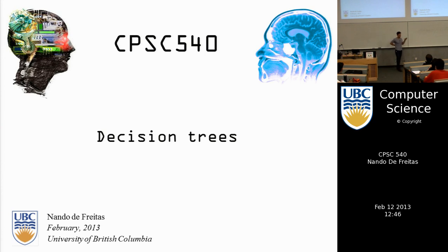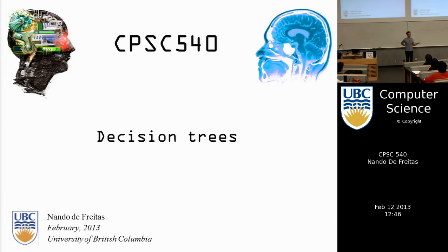Decision trees are a very popular technique in machine learning. They used to be widely used two to three decades ago, but they sort of fell out of fashion because they don't tend to generalize very well. They have some very nice properties, but because of their inability to be very good at predicting, folks stopped using them.